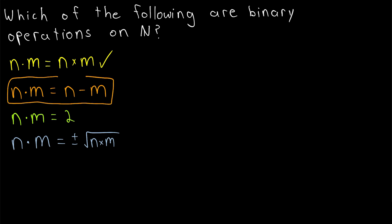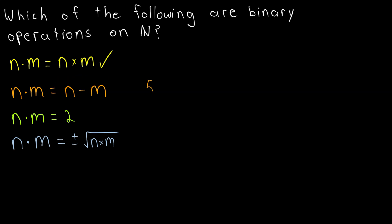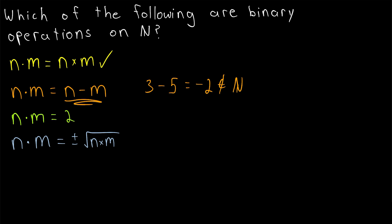Next is the operation of subtraction. Is this a binary operation on the set of natural numbers? If we subtract two natural numbers, we will certainly get exactly one answer, so this is a function. But is subtraction closed on the natural numbers? The answer is no. For example, 5 minus 3 equals 2, which is a natural number, so that works out fine. But consider 3 minus 5 — this equals negative 2, and negative 2 is not an element of the natural numbers. Thus, subtraction over the naturals is not closed, so subtraction is not a binary operation on the naturals.